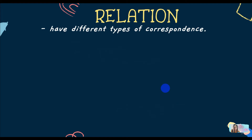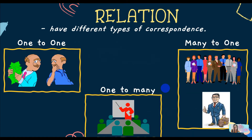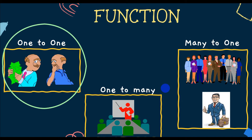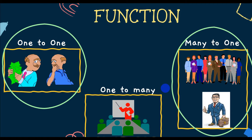In a relation, there are different types of correspondence. We have one-to-one, one-to-many, and many-to-one. For a relation to be a function, the elements in x should have exactly one pair in y. So automatically, one-to-one correspondence is a function, and many-to-one is also a function — because the element in x has only one pair in y. One-to-many is not a function because an element of x has multiple partners in y.